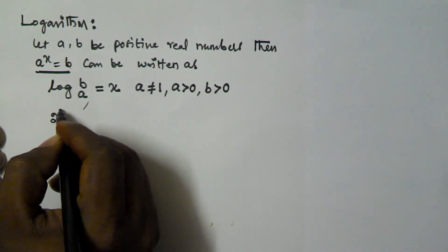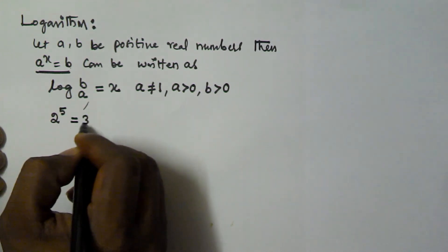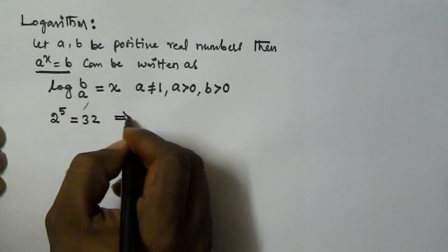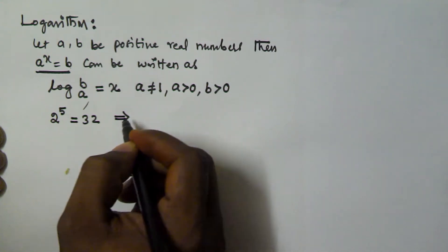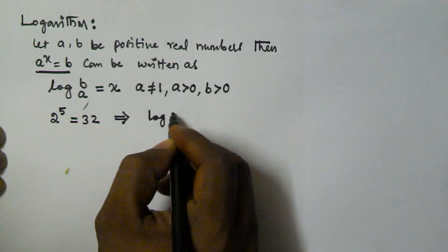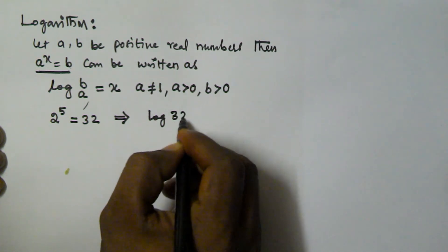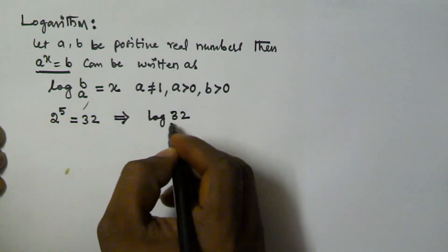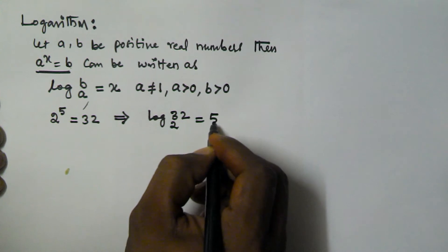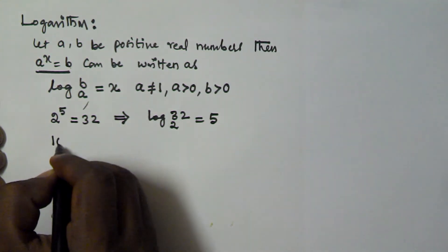For example, if we have 2 to the power of 5 is equal to 32, then in logarithm format this can be written as log 32 base 2 is equal to 5.